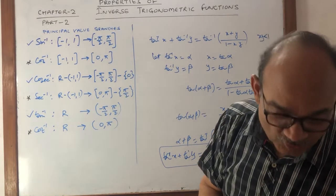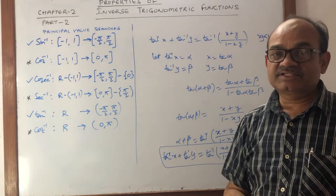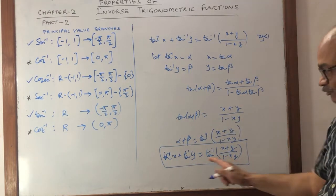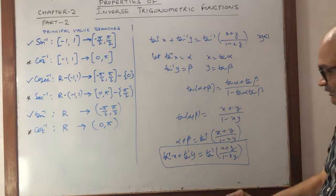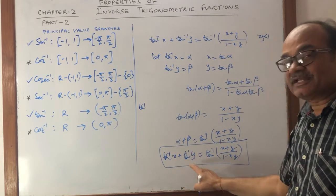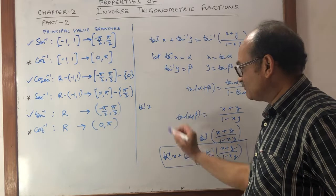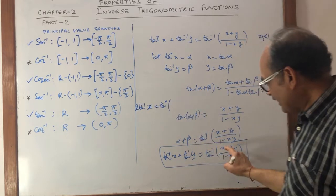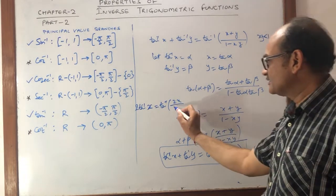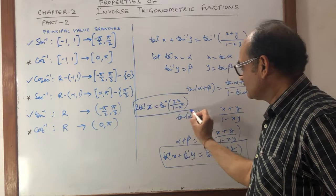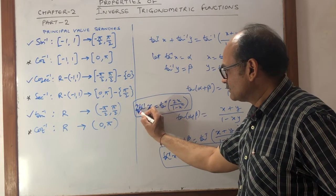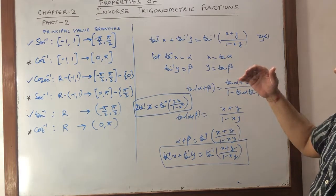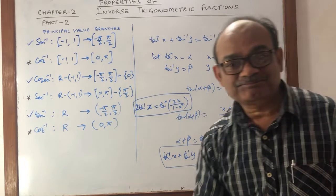Property 6 is for homework, but a key corollary: if we substitute y = x in Property 5, we get 2tan⁻¹(x) = tan⁻¹((2x)/(1-x²)). This is another important concept derived from Property 5 by setting both terms equal to tan⁻¹(x). We will now start questions based on this important property.